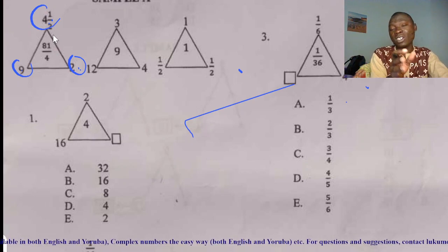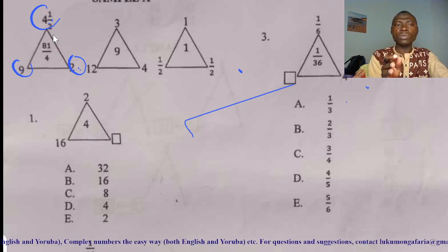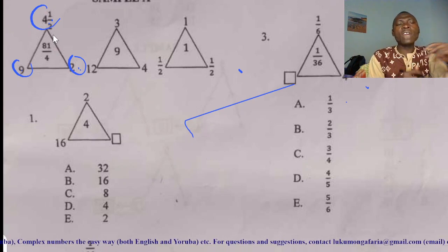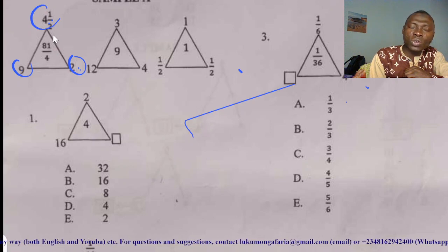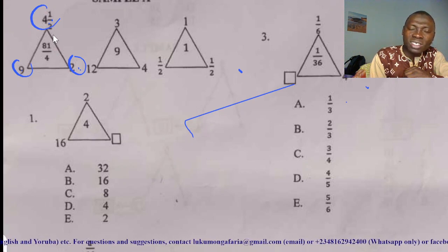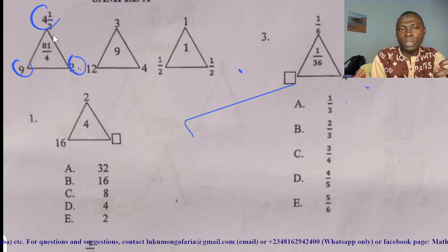How do we now solve this kind of question? I have 9, 4, and I have 2. Your mind should first of all think about the shape. We have a triangular shape, which is saying that all these three numbers are closely related.